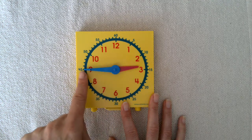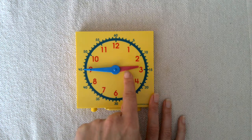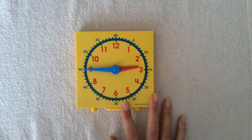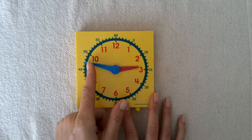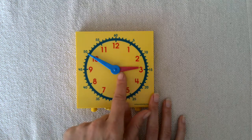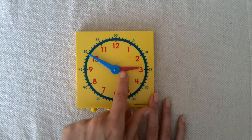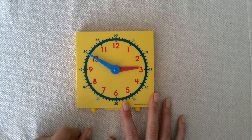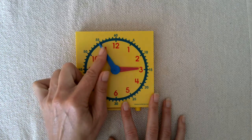So when my minute hand is pointing to the forty-five, it's still two forty-five. Even as it gets closer to going all the way around, it's not yet three. The time still shows two fifty. Two fifty-five.